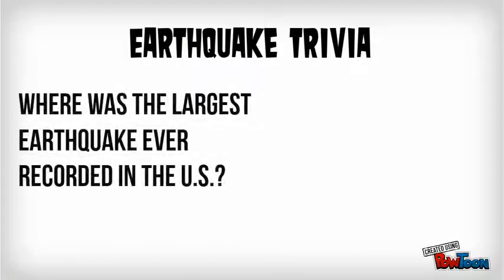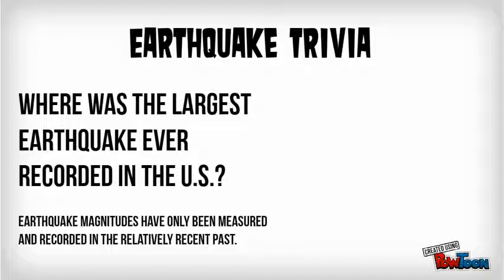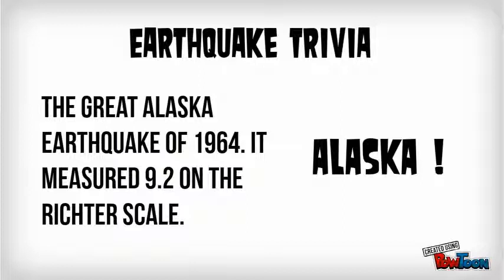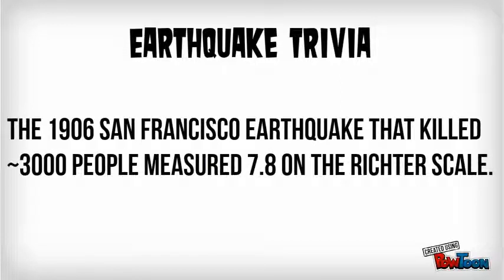Another related question: where was the largest earthquake ever recorded in the United States? Remember that earthquake magnitudes have only been measured and recorded in the relatively recent past. If you said Alaska again, you'd be right. The Great Alaskan earthquake of 1964 was the largest quake recorded in the United States, measuring 9.2 on the Richter scale. Some of you may have heard of the San Francisco earthquake of 1906 that killed about 3,000 people — that quake only measured 7.8 on the Richter scale, but there were far more people living in that area, and that's what made the difference.